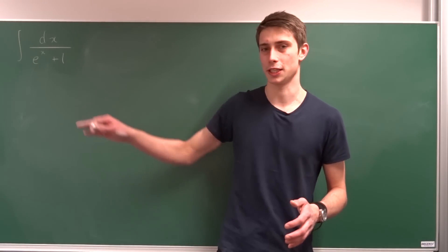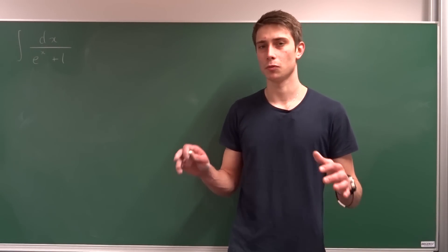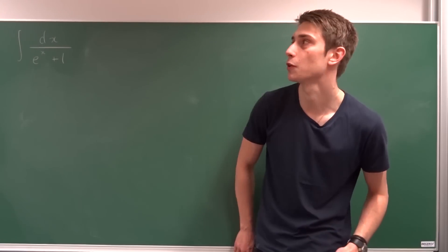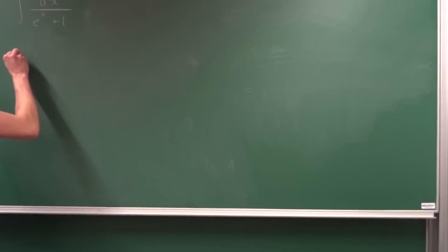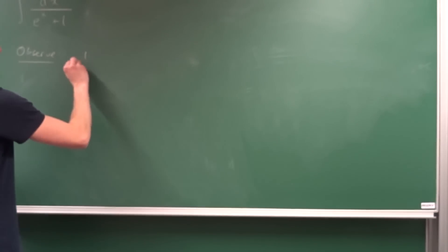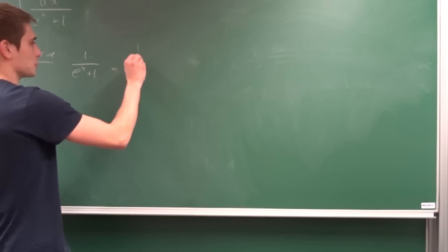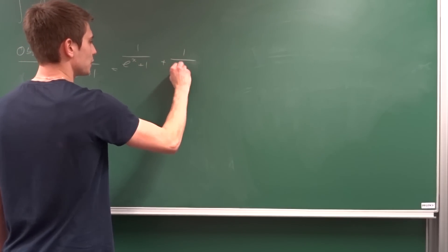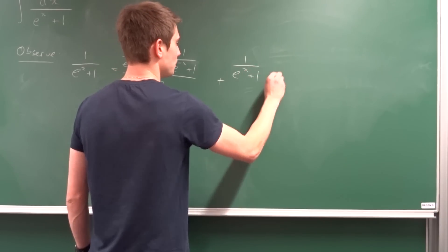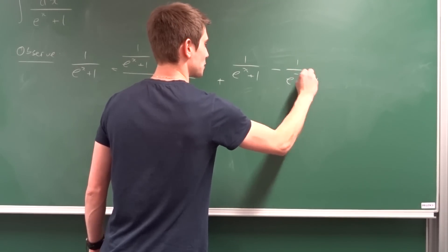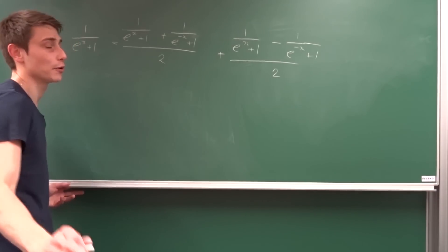For the fourth and most exotic method, we use the fact that every function can be split into the sum of an even and an odd part. We observe that 1 over e to the x plus 1 can be written as: 1 over e to the x plus 1 plus 1 over e to the minus x plus 1, all over 2, plus 1 over e to the x plus 1 minus 1 over e to the minus x plus 1, all over 2.